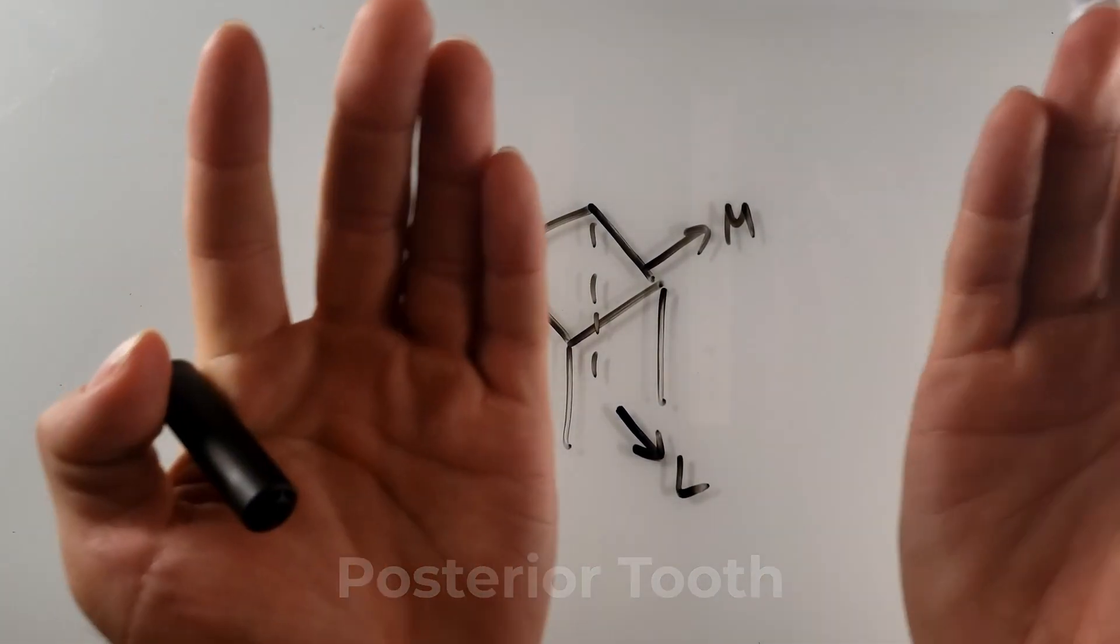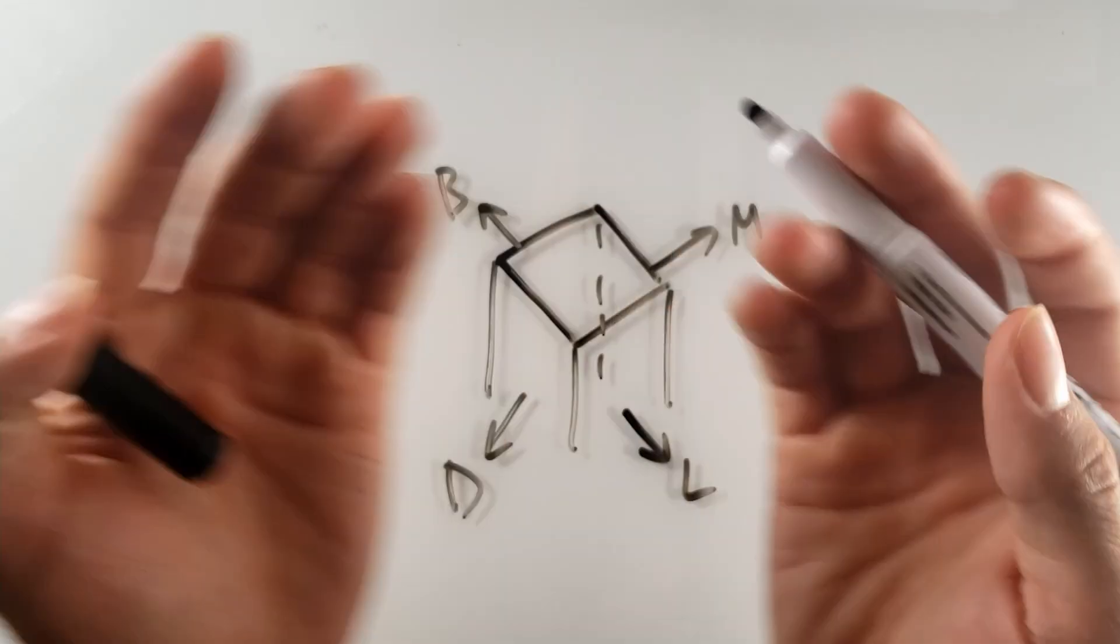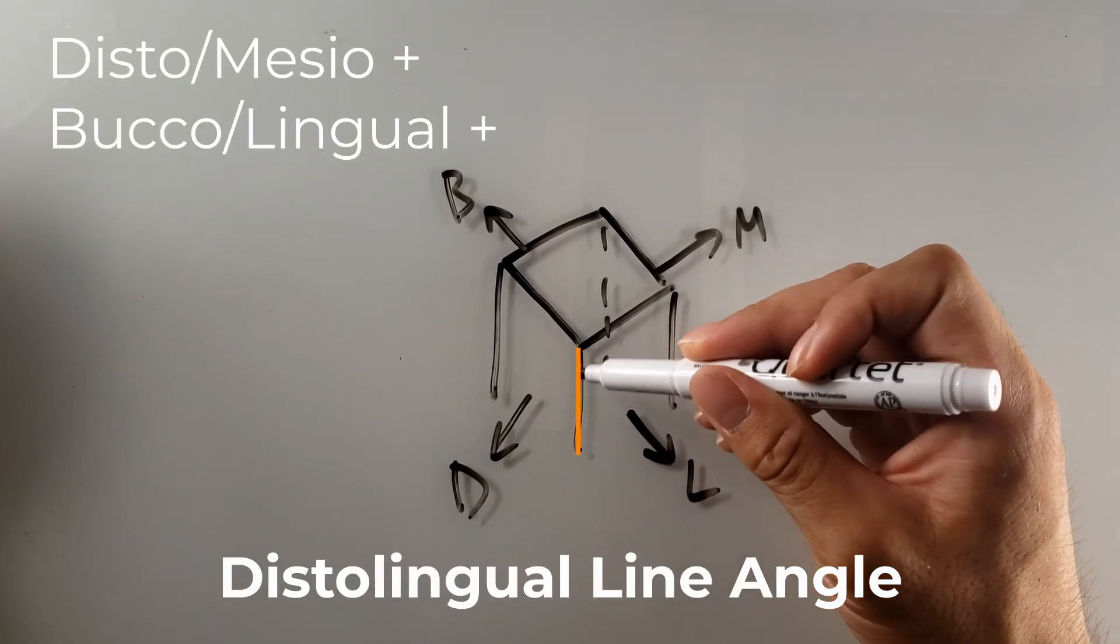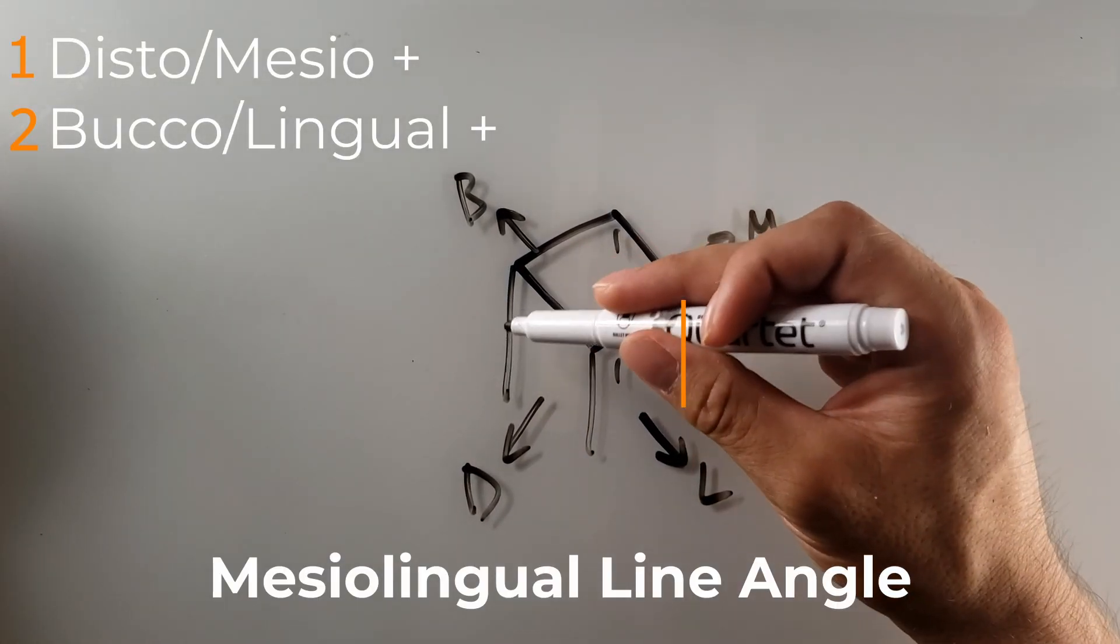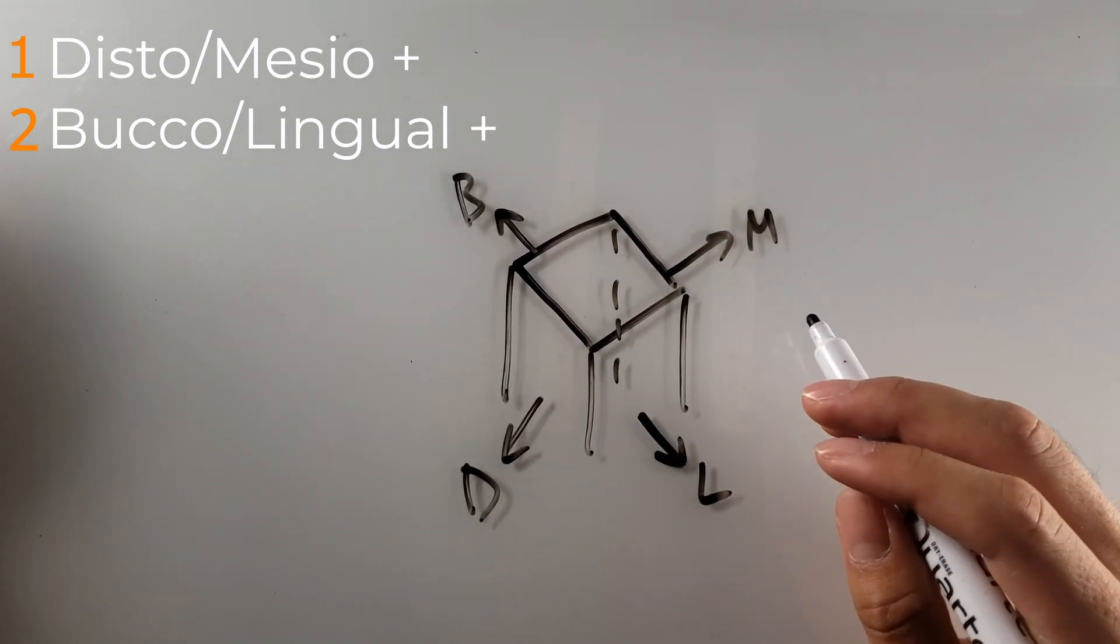Now whenever we're thinking line angles, we're thinking two junctions meeting together. So right here, this would be the distal-lingual. Again, we're always starting with distal and mesial. This would be the mesial-lingual, distal-buccal, all of them followed by line angle.